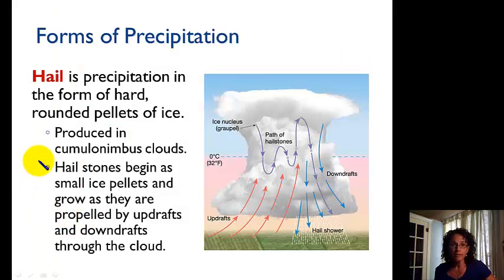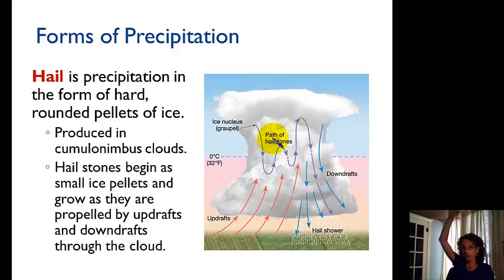So two more, hail, hard ice pellets, and they form in cumulonimbus clouds. In cumulonimbus clouds, there are a lot of uplifts. So remember, these are really tall clouds. They stretch all the way through the three different cloud levels that we have talked about.